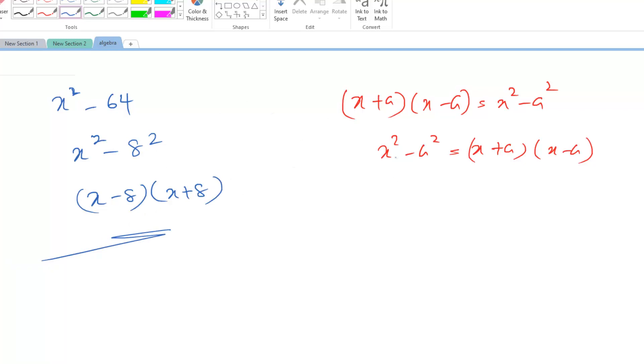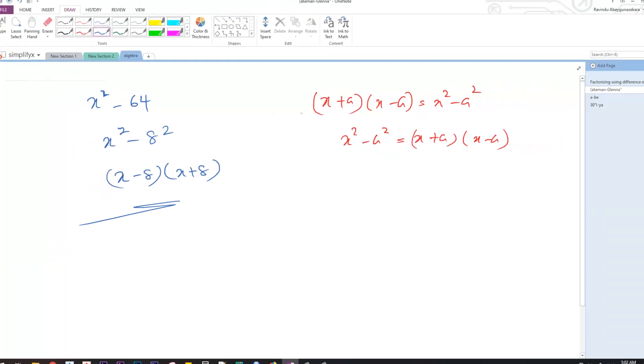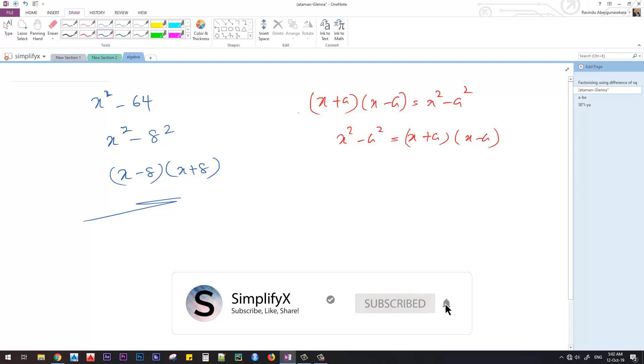Job done. We have successfully factorized the expression X squared minus 64. The answer is (X - 8) multiplied by (X + 8). Let's jump into the next problem.